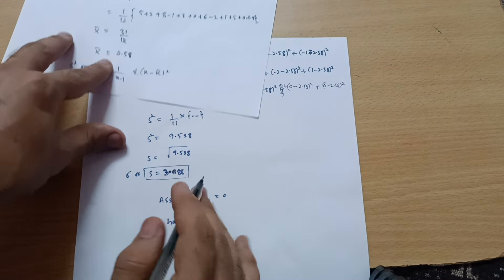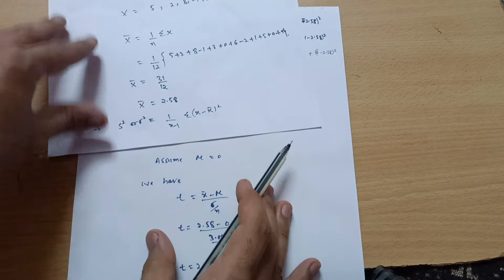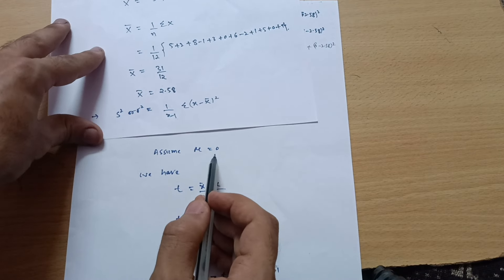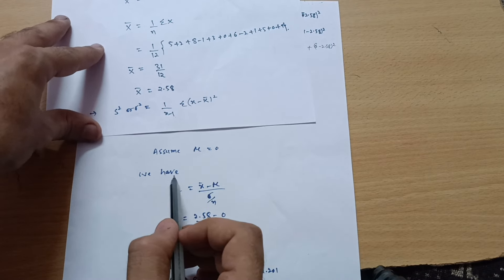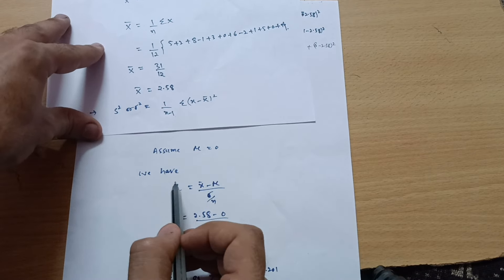So, now in the problem, the mu is not given in the problem. Mean is not given in the problem. So, we can assume that mu is equal to 0 as it is not given in the problem. We have the formula for the t distribution: t is equal to x bar minus mu divided by sigma divided by root n or it is S over here.